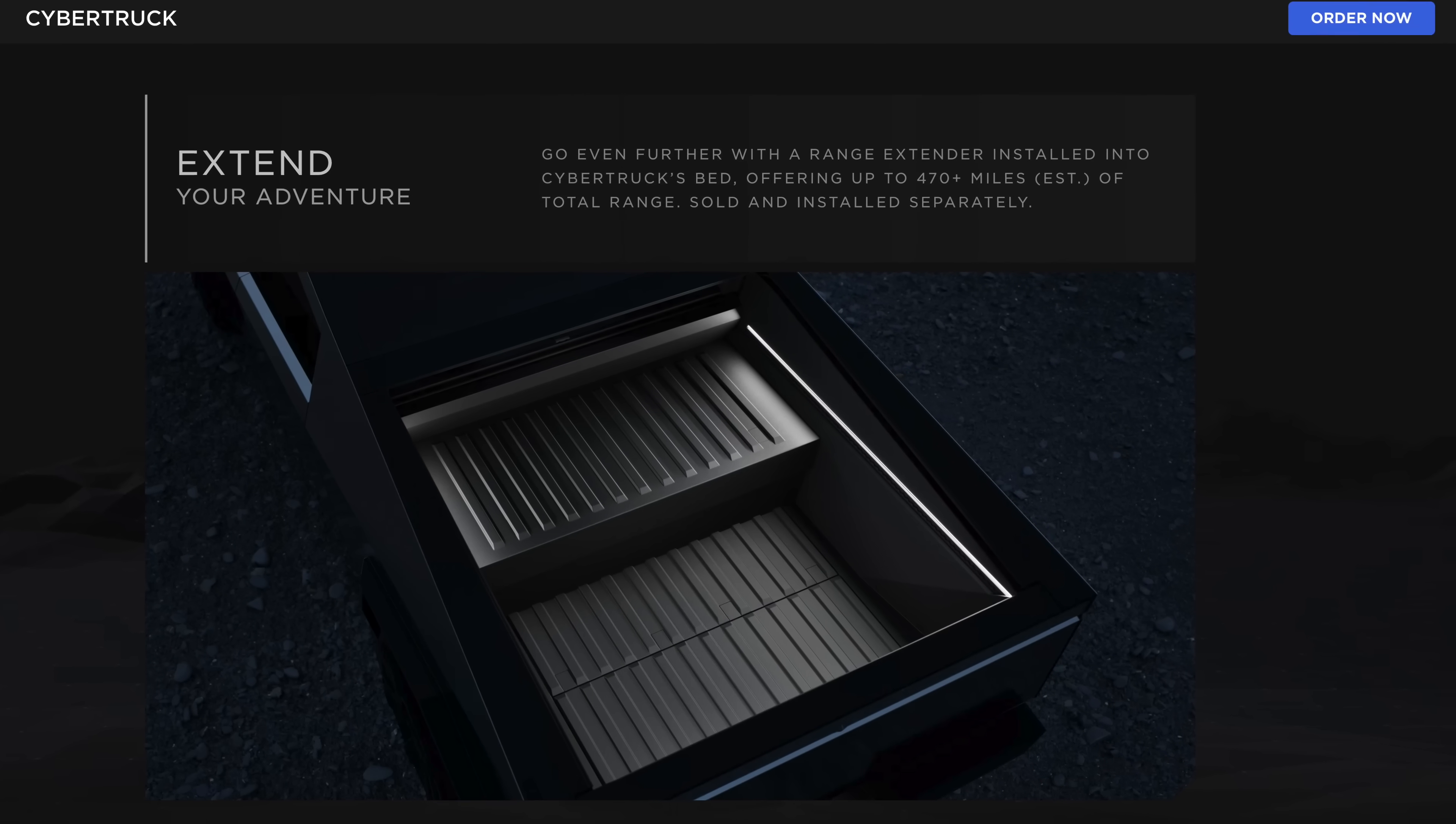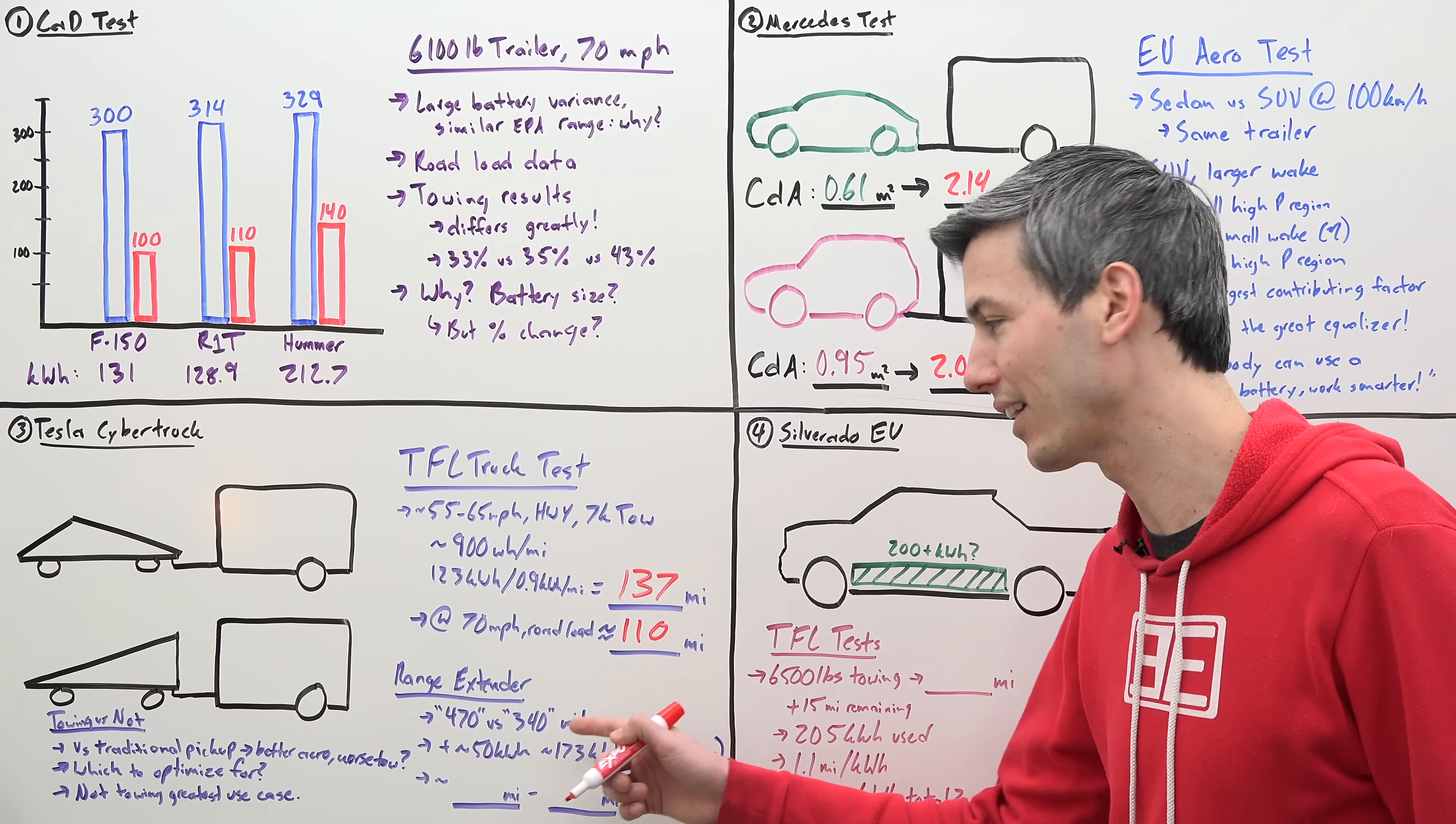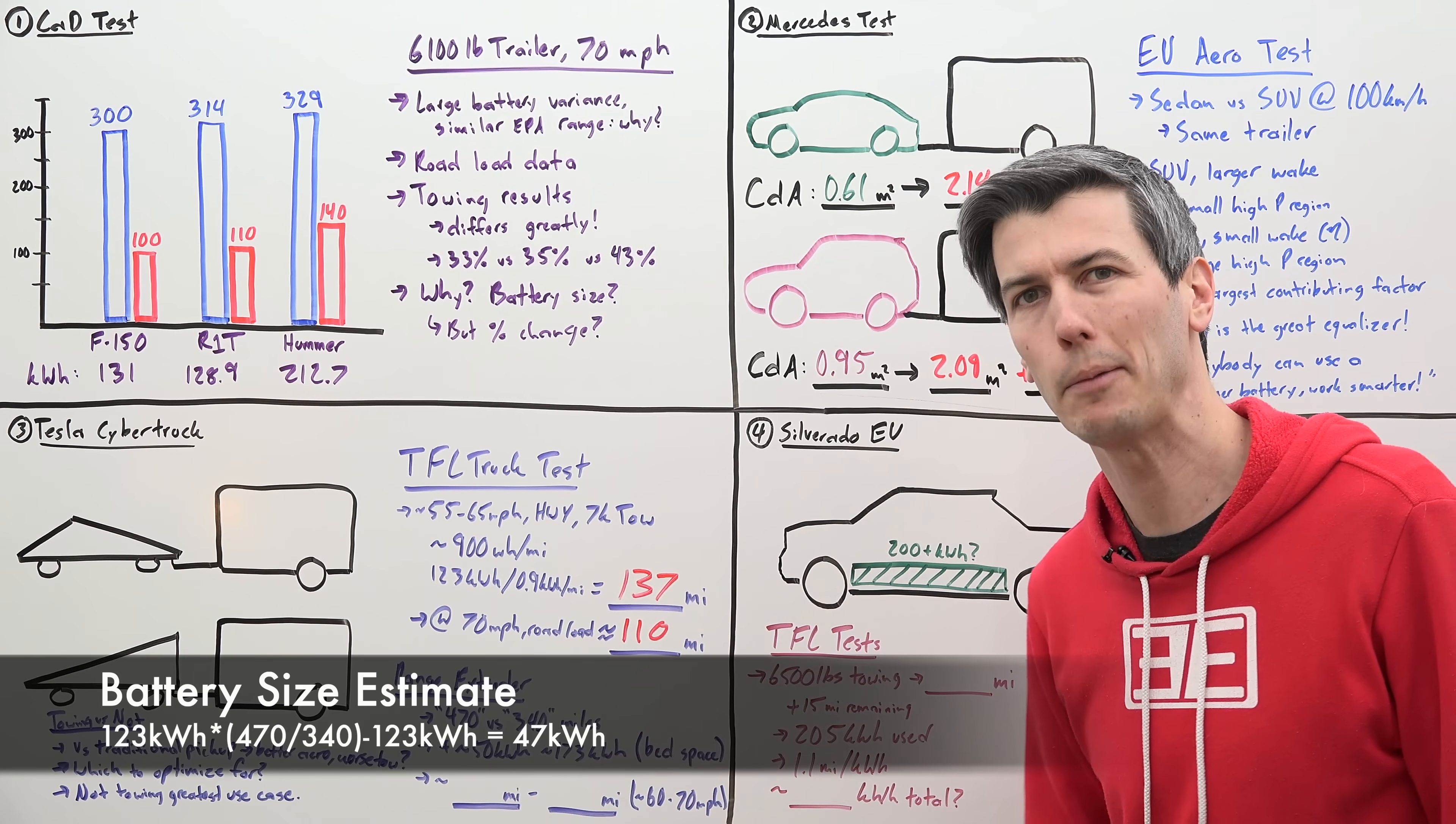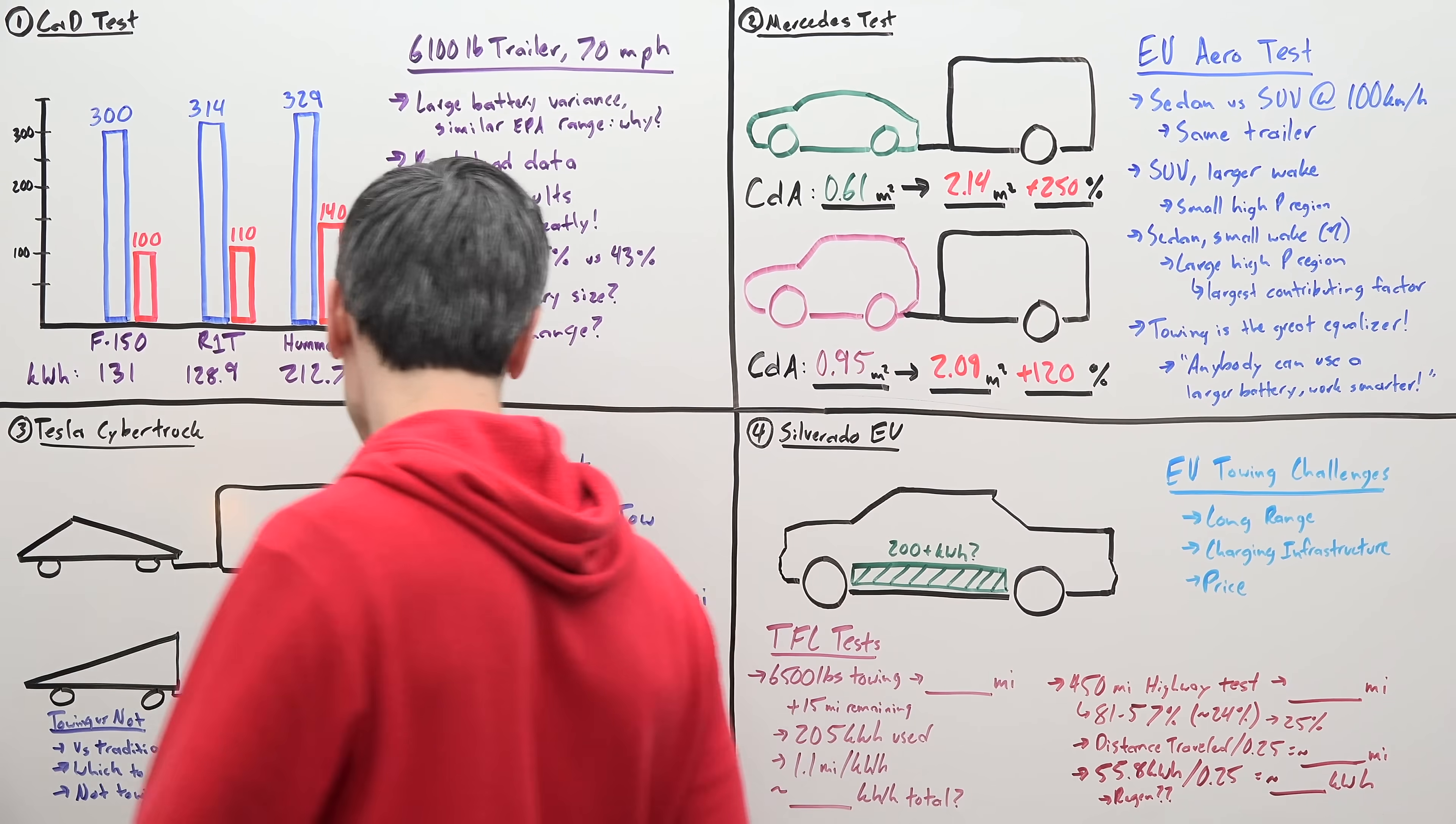Now Tesla has said that they're going to release a range extender for the Cybertruck, which will bring its range from 340 miles EPA rating to about 470 miles. Now these ratings are generally a bit higher than what you'll actually get in the real world, but regardless, doing some quick math, you can estimate that battery pack. The additional range extender is going to add about 50 kilowatt hours, giving you a total of about 173 kilowatt hours for the truck.